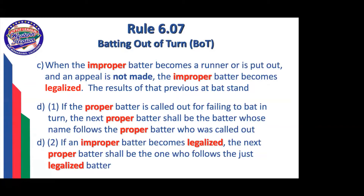When the improper batter becomes a runner and an appeal is not made, the improper batter becomes legalized. The results of that previous at bat will stand. So if I had an improper batter not properly appealed, that improper batter is standing on first base — who is the next batter supposed to be? If an improper batter becomes legalized, the next proper batter shall be the one who follows the just-legalized batter. So if we batted one, two, three, and number three comes up when number one is supposed to come up, number three gets a hit and is on first base and is not appealed — who is the next batter? Because three was legalized, number four is the next proper batter. What about one and two? They have lost their at-bats because the appeal was not properly made and they will come to bat next time around.